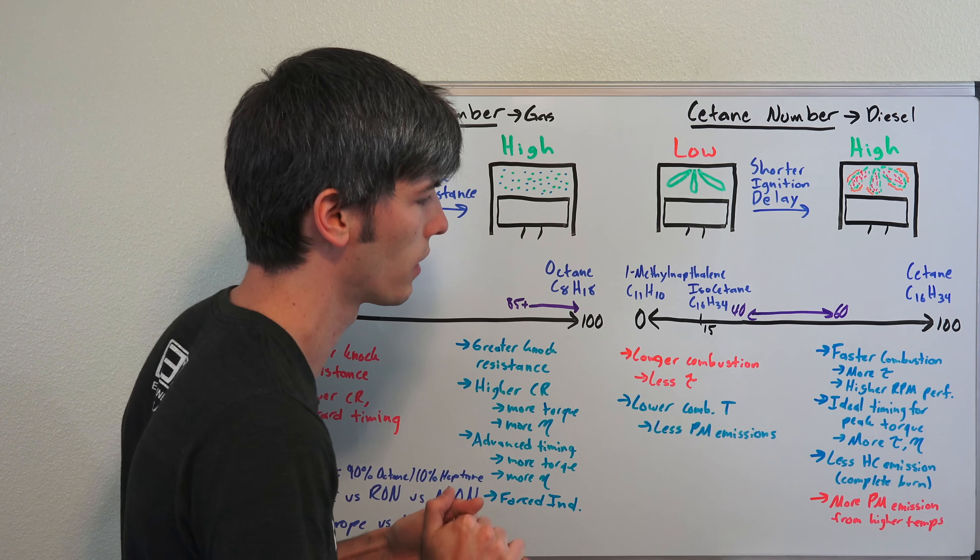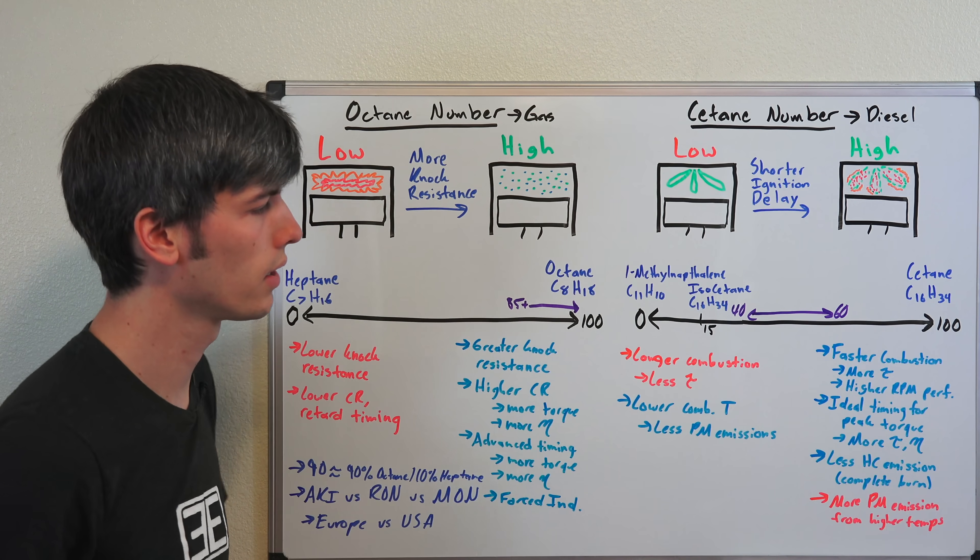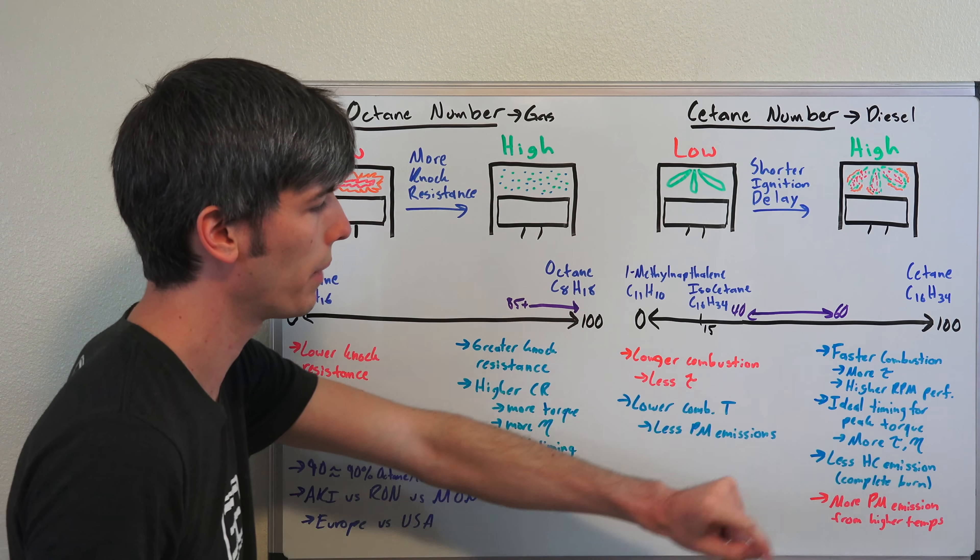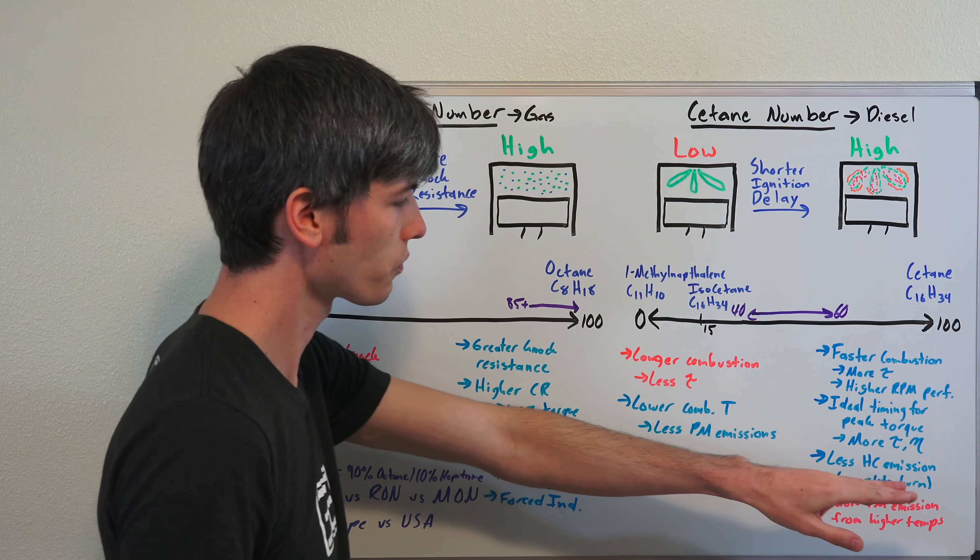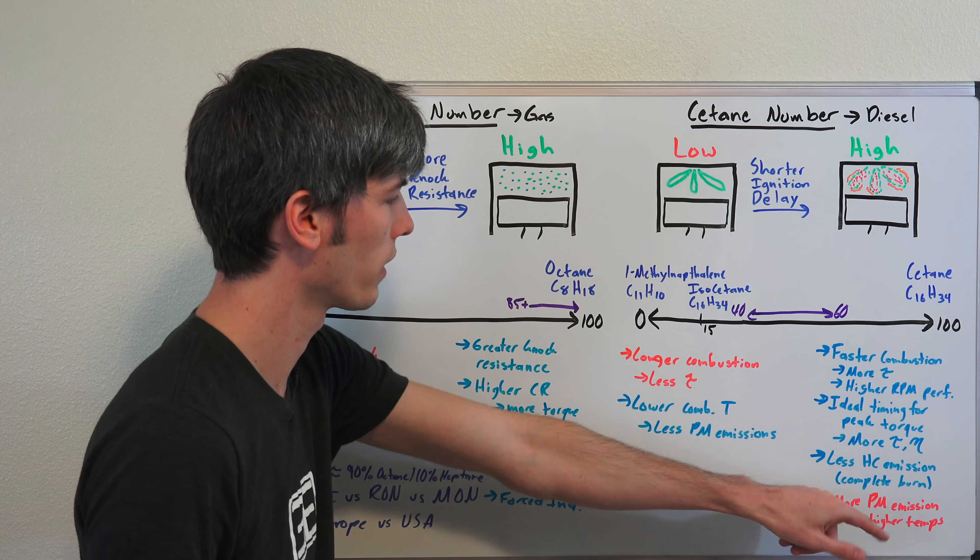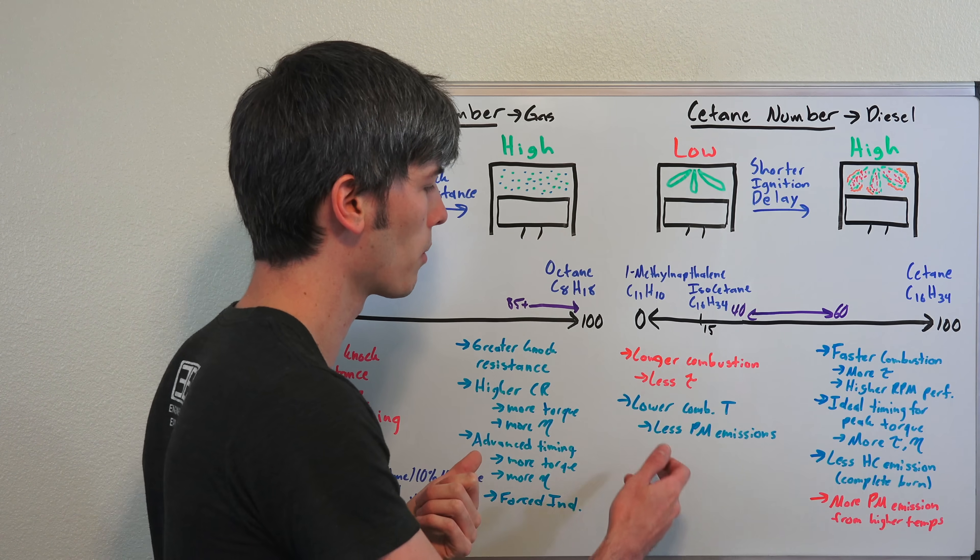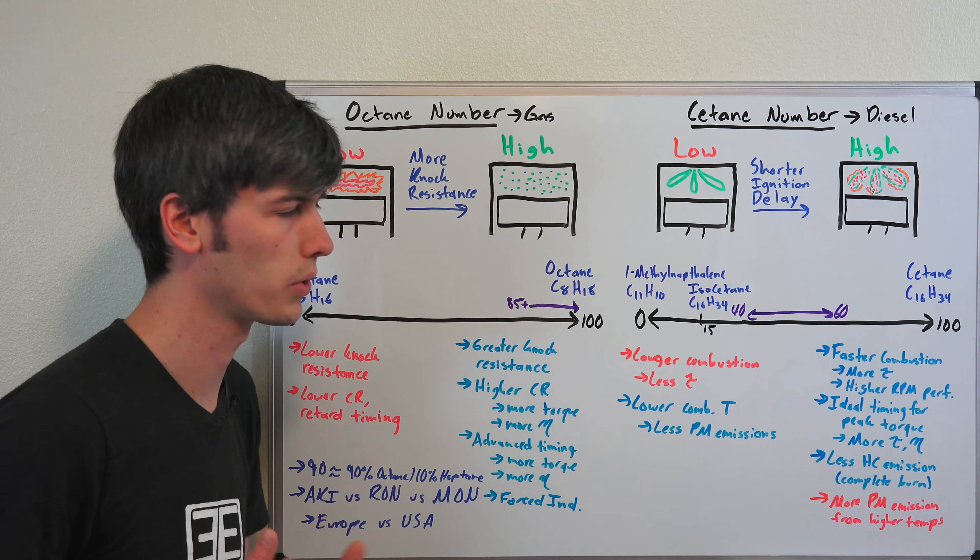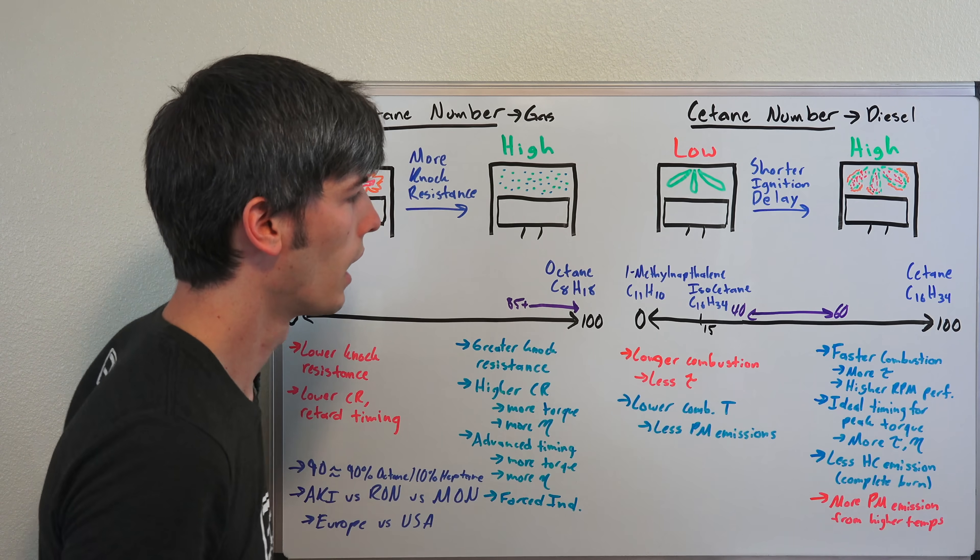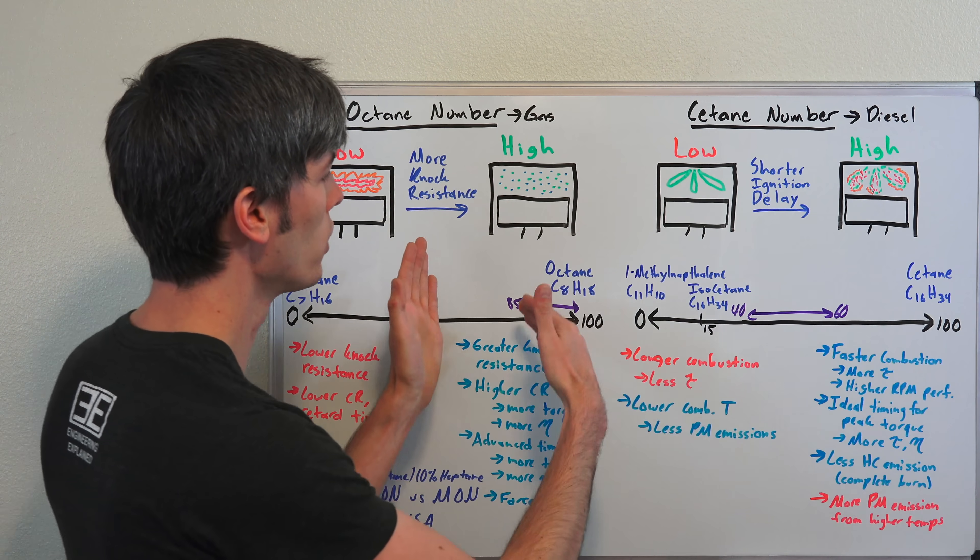You also get less hydrocarbon emissions. There have been some studies that have shown you can get more complete burn with higher cetane numbers. However, because this burns faster, it tends to burn hotter, and as a result you tend to get more particulate matter emissions. Lower combustion temperatures with lower cetane numbers can result in lower particulate matter emissions, but overall you're going to have longer combustion and less torque produced.